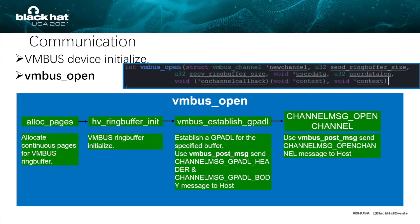The VMBus open function is used for guest VMBus device initialization. In this function, first, it allocates contiguous pages for the VMBus ring buffer and initializes the VMBus ring buffer. Second, it establishes a GPADL for the specified buffer. Third, it sends an open channel message to the host.